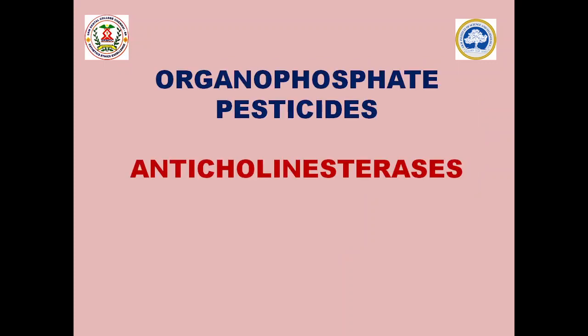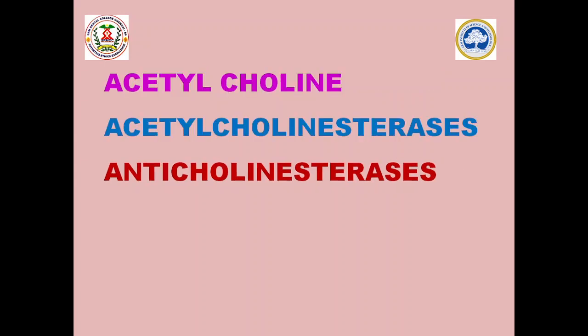Organophosphate compounds basically belong to the anti-cholinesterase group. Specifically, they tend to produce irreversible anti-cholinesterase activity. Before going into anti-cholinesterase toxicity, we first have to be thorough with certain terms. Acetylcholine is a neurotransmitter that plays a predominant role in the parasympathetic nervous system.